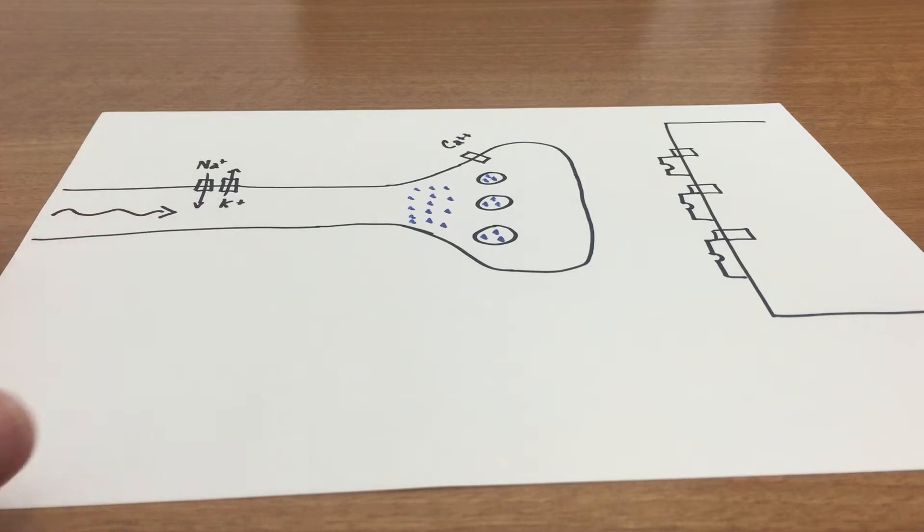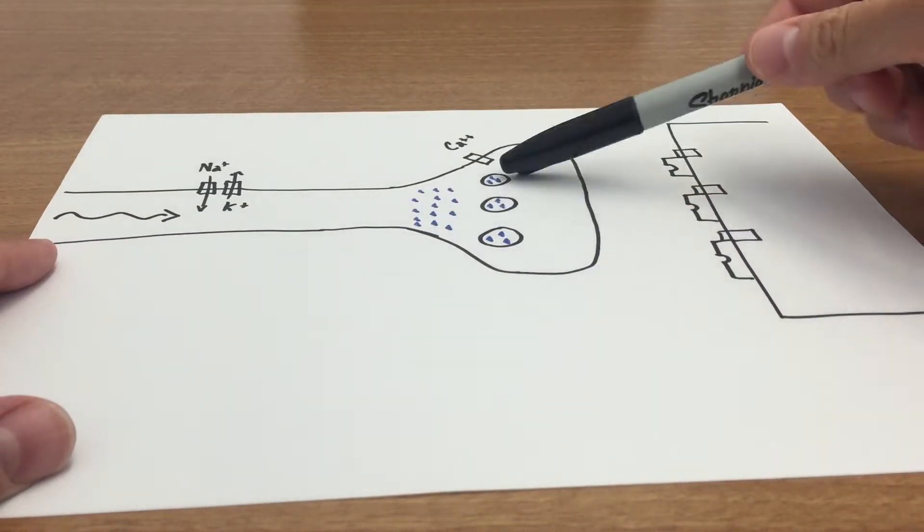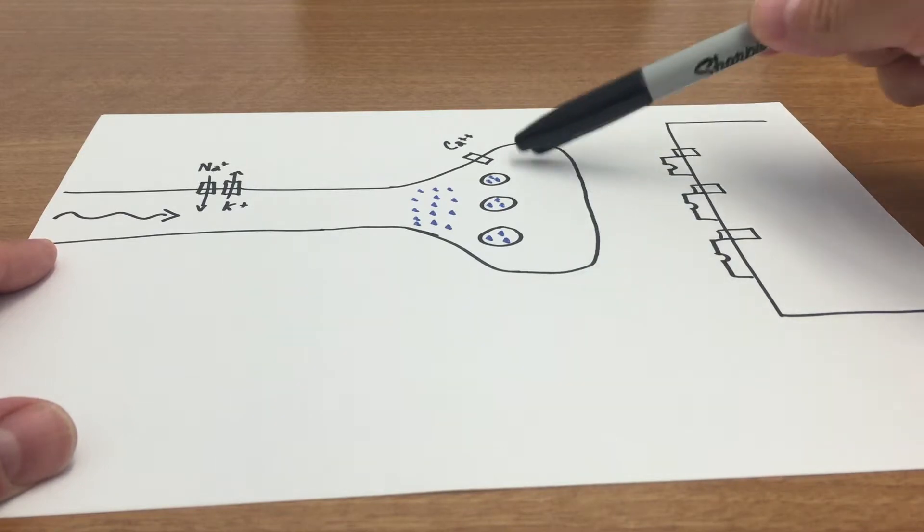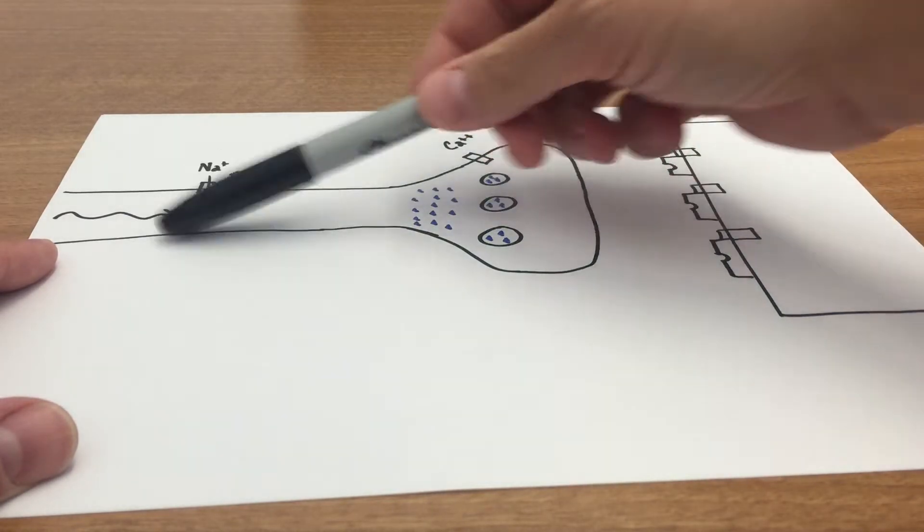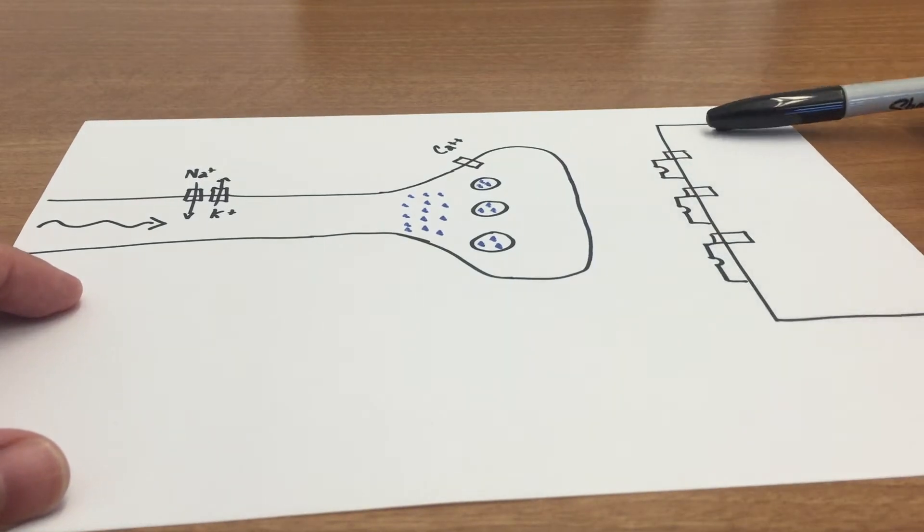If you can imagine that this diagram I've drawn here is the axon of a neuron, this is the terminal axon here, so this is all presynaptic. I have my synapse right here, I have the muscle.